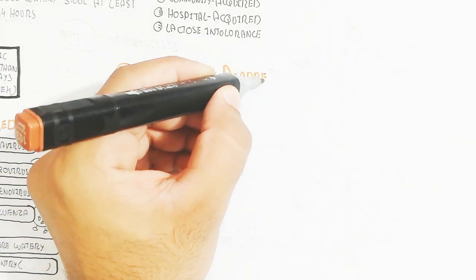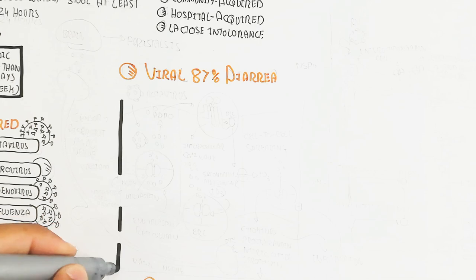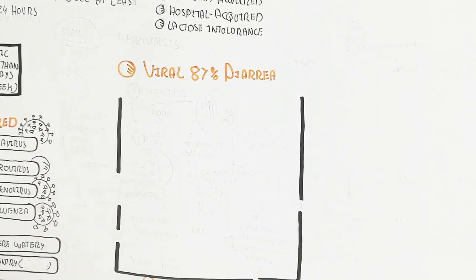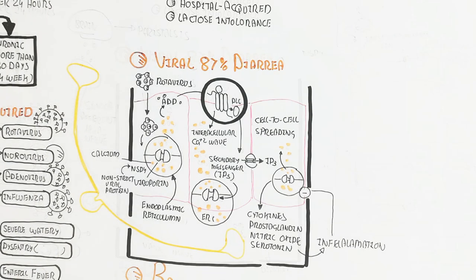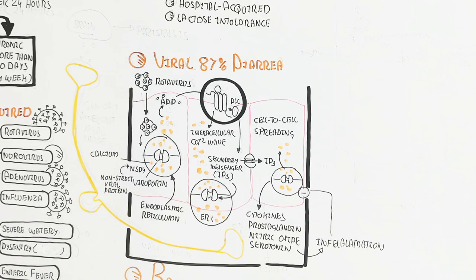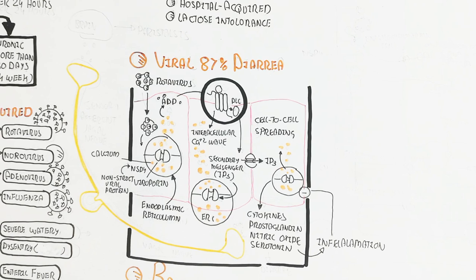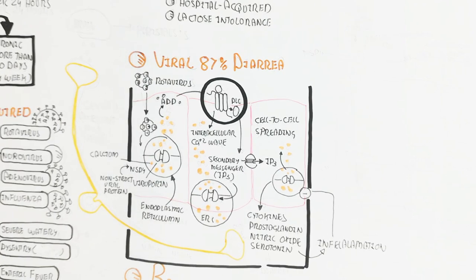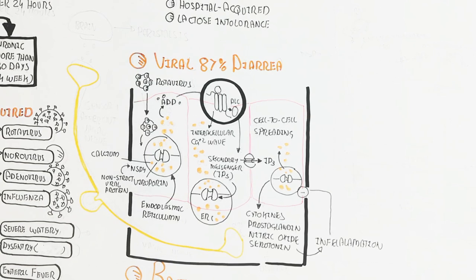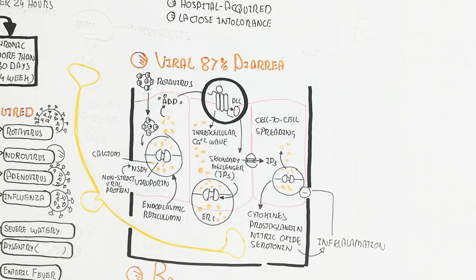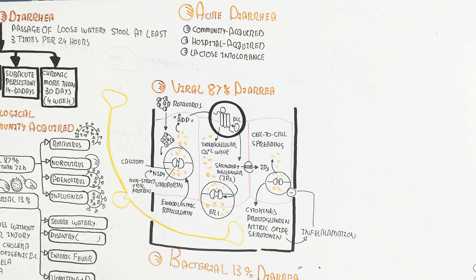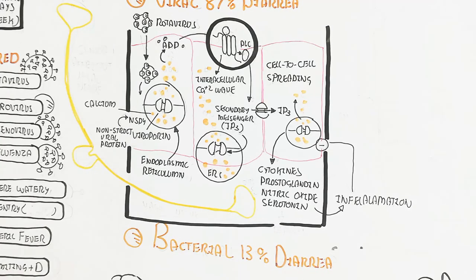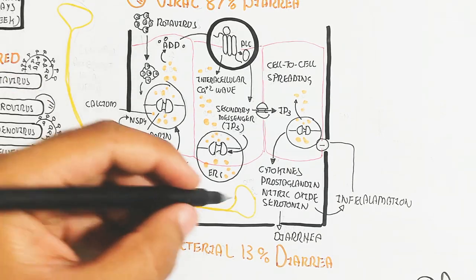Let's understand viral diarrhea, which is 87%. We'll understand rotavirus. The virus enters the enterocyte and triggers non-structural protein NSP4. The viroporin releases calcium, which triggers ADP. This creates an intracellular calcium wave leading to a cascade of phosphorylation and the secondary messenger IP3. IP3 also increases calcium and leads to cell-to-cell spreading.